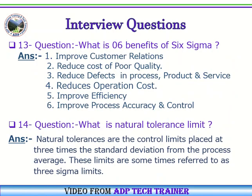Question Number 13: What are six benefits of Six Sigma? Answer: 1. Improve customer relations. 2. Reduce cost of poor quality. 3. Reduce defects in process, product and service. 4. Reduce operation cost. 5. Improve efficiency. 6. Improve process accuracy and control.